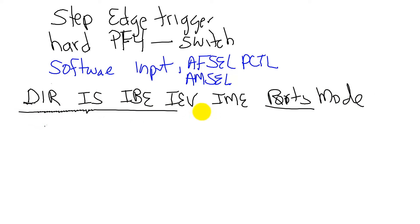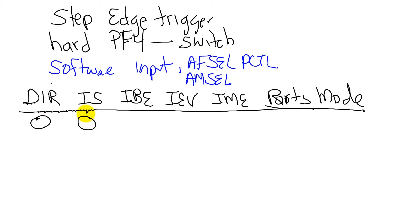In all of the modes, we're going to set the direction register to zero. In our case we're interested in edges, so we are going to set the IS bit equal to zero, and that means edge.